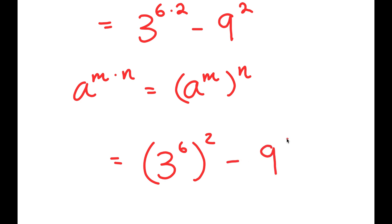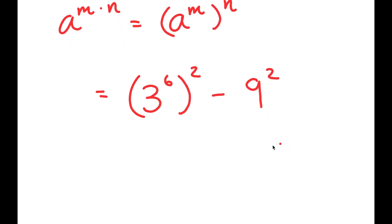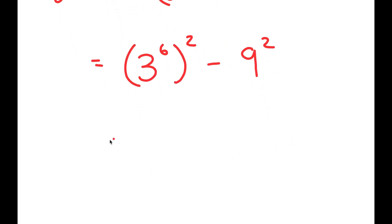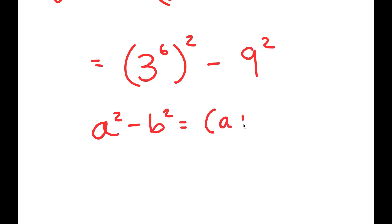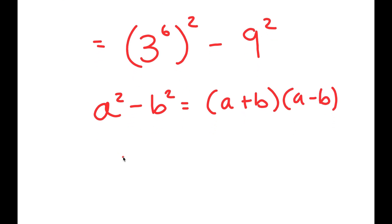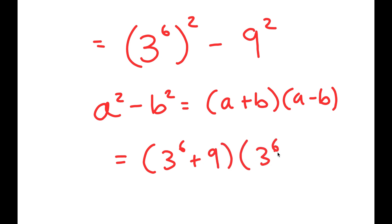And I have this minus 9 to the power of 2, since I rewrote 81 as 9 squared. Now, using the difference of squares identity — a squared minus b squared equals (a + b)(a - b) — I get (3 to the power of 6 plus 9) times (3 to the power of 6 minus 9).